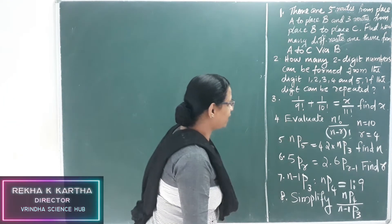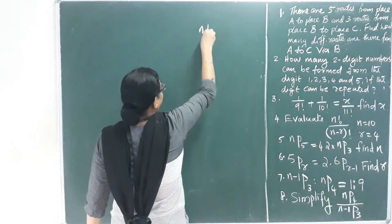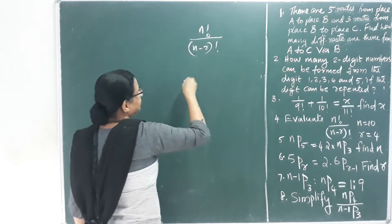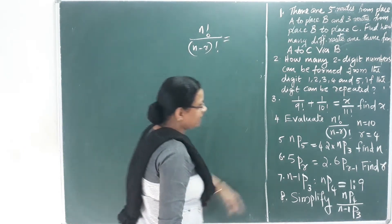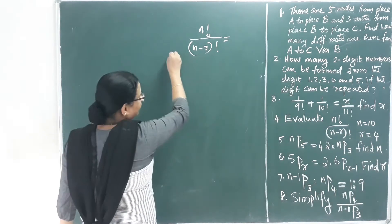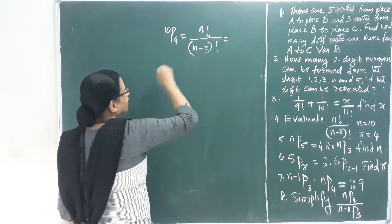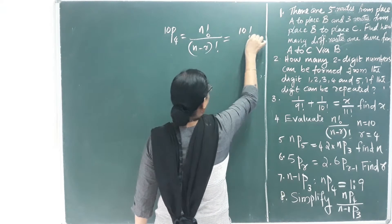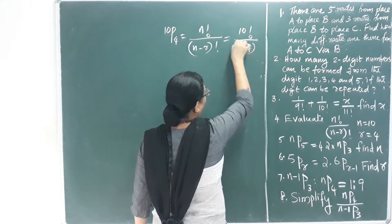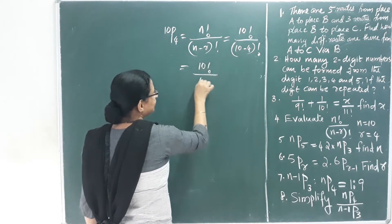Evaluate n factorial divided by n minus r factorial. This is equal to n factorial where n equals 10 and r equals 4. So this is 10P4, which equals 10 factorial divided by 10 minus 4 factorial, which is 10 factorial divided by 6 factorial.